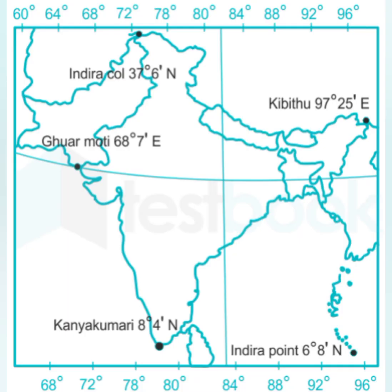The third question is: which is the westernmost point of India? The answer is Guhar Moti, which is in Kutch, Gujarat — it is the westernmost end of India. The latitude and longitude is 23.713 degrees North and 68 degrees 7 minutes East.